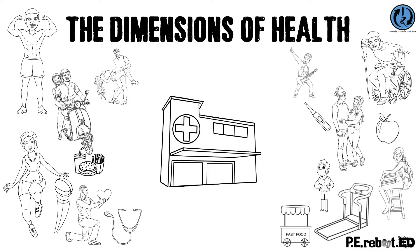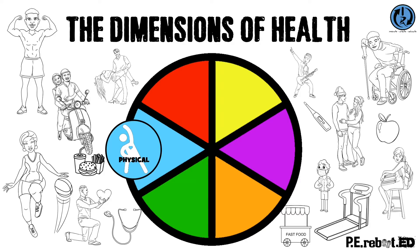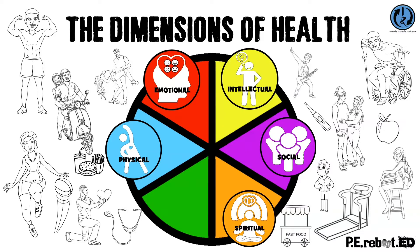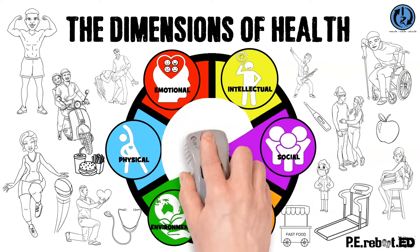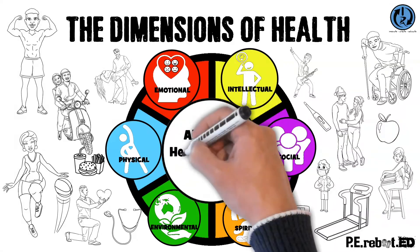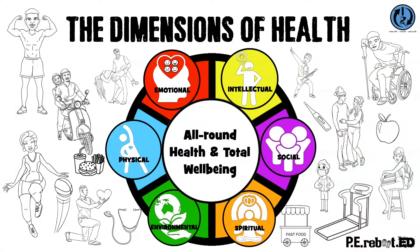The six dimensions of health are physical, emotional, intellectual, social, spiritual and environmental. Each dimension of health incorporates many factors that can negatively or positively affect health, and each can be analysed looking for ways a person might improve their all-round health and wellbeing.